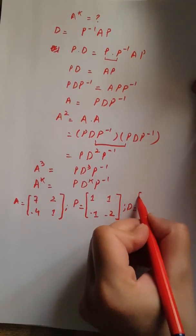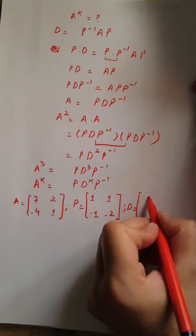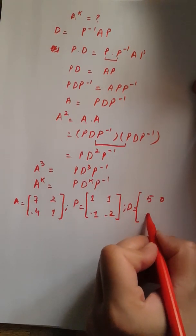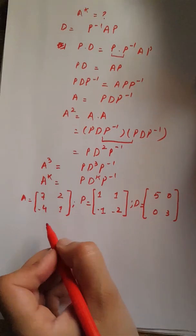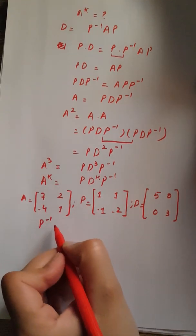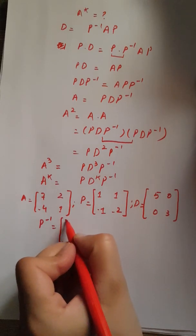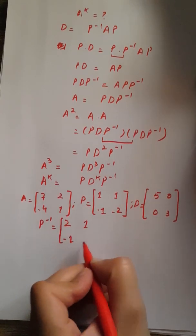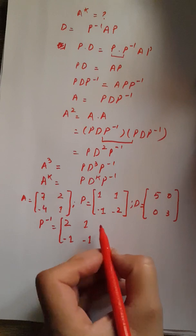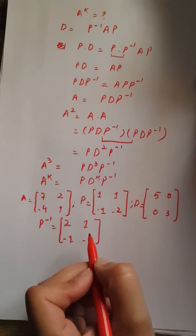The diagonal matrix D equals [5, 0; 0, 3], and another information we have is P inverse, which equals [2, 1; -1, -1].